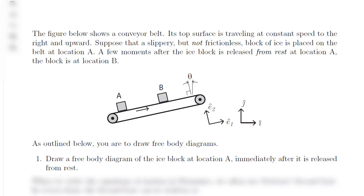The figure shows a conveyor belt whose top surface is traveling at a constant speed to the right and upward. Suppose we place a block of ice at location A. That block of ice is slippery but not frictionless. After placing the block at location A, a few moments later you can find the block at location B.